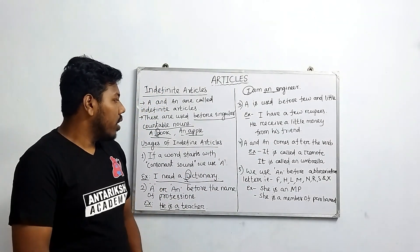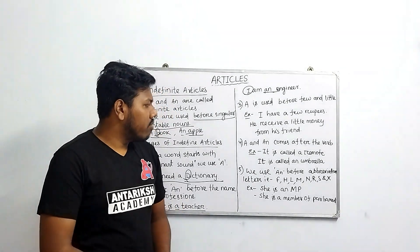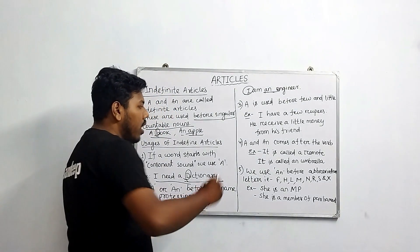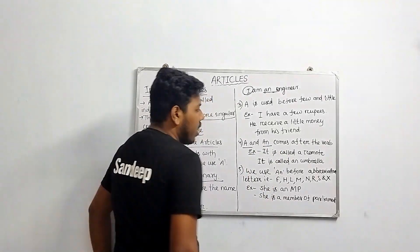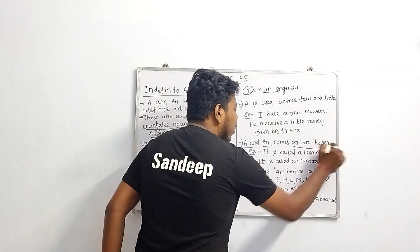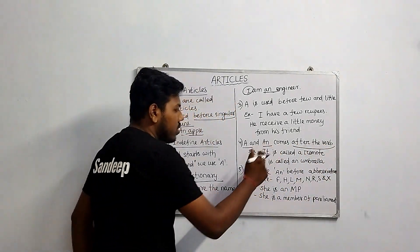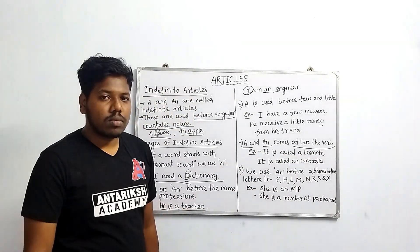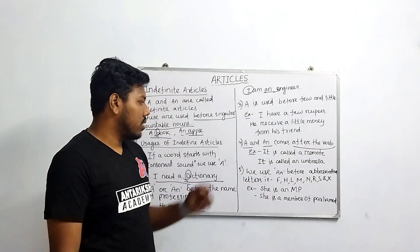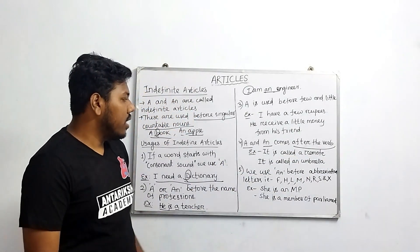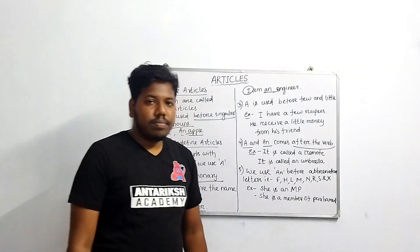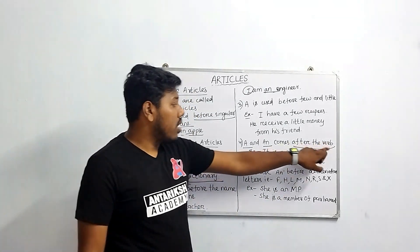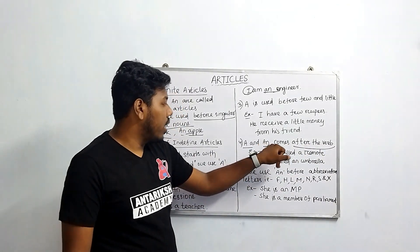Another important point is that 'a' and 'an' come after the verb. For example: 'It is called a remote' and 'It is called an umbrella.' So after the verb, we use 'a' or 'an'.